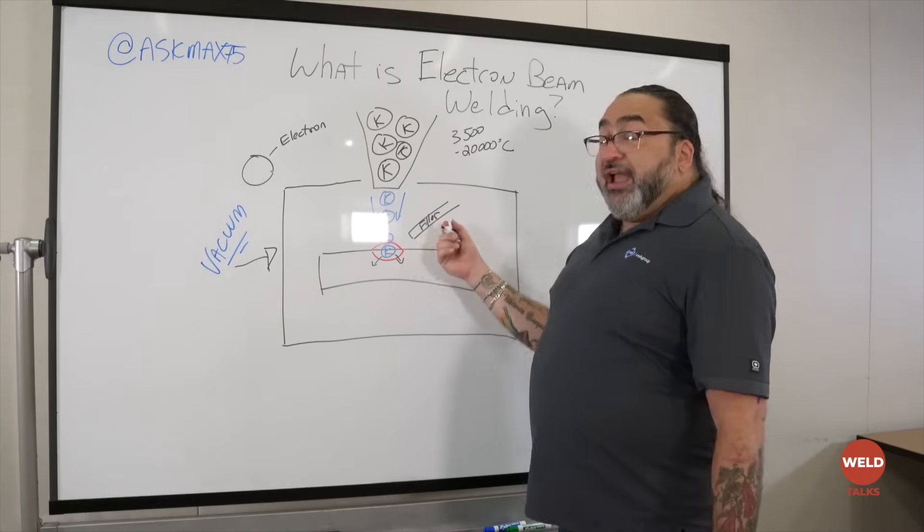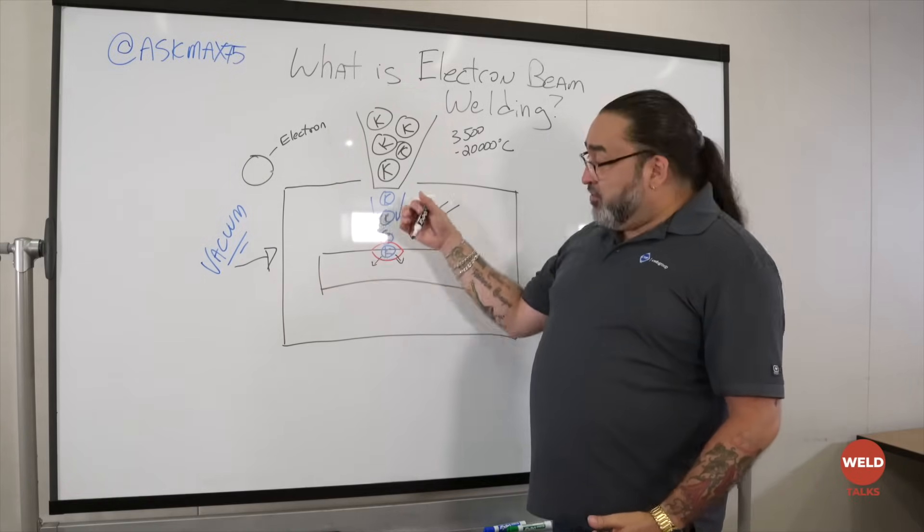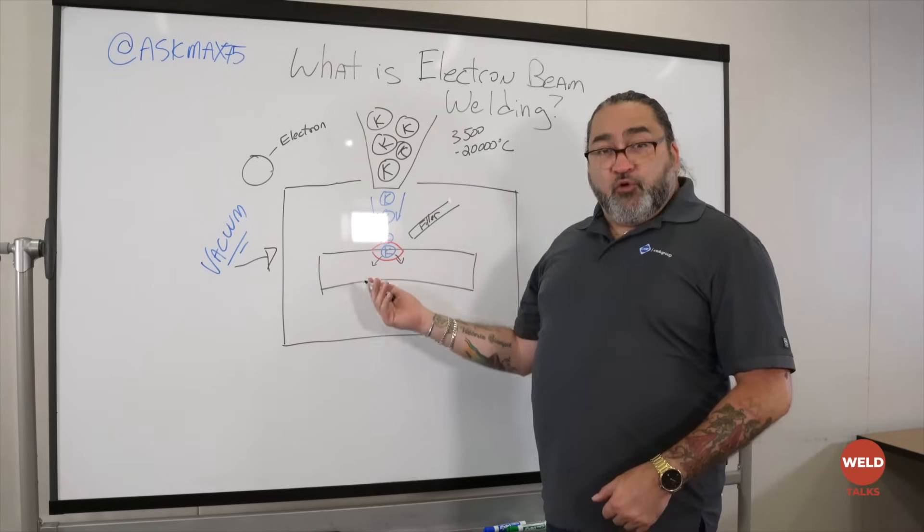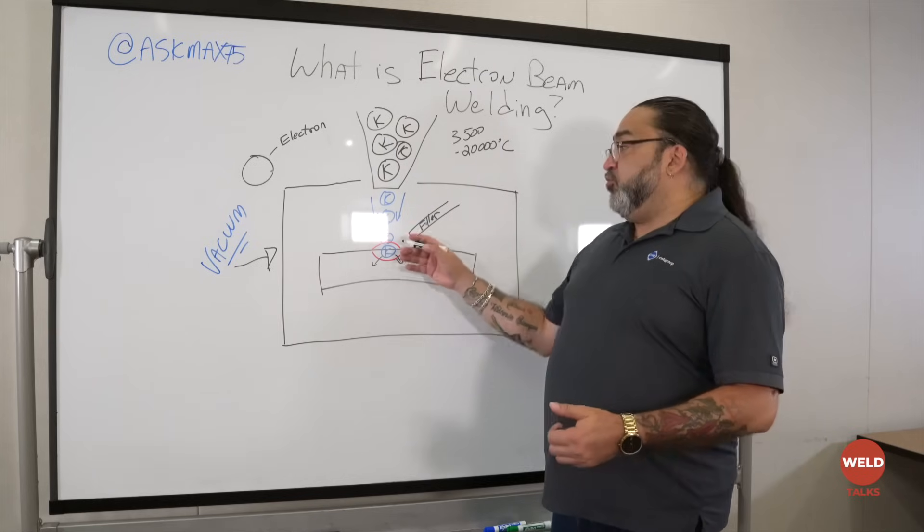Once you get the weld going, you can weld a couple different ways. Autogenously, which is the heat of the electron beams heating the plate through that kinetic energy. Or you can add filler in forms of powder or a filler rod like other weld processes to increase the weld.